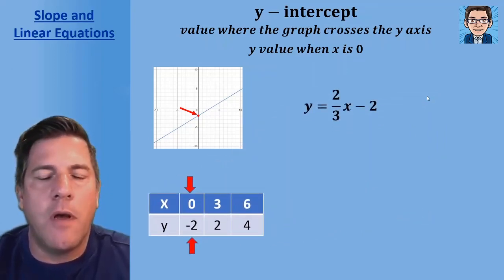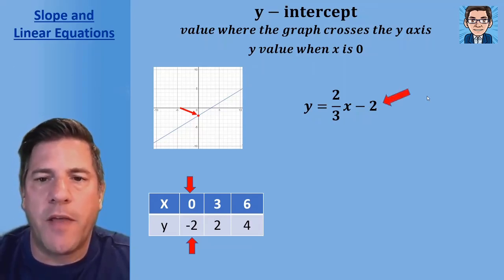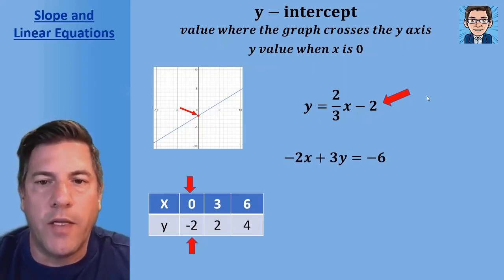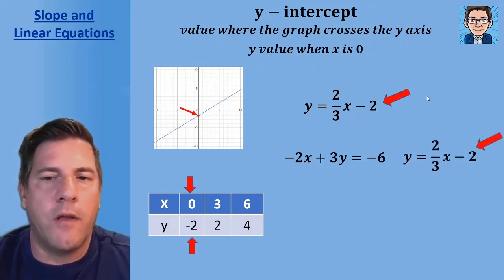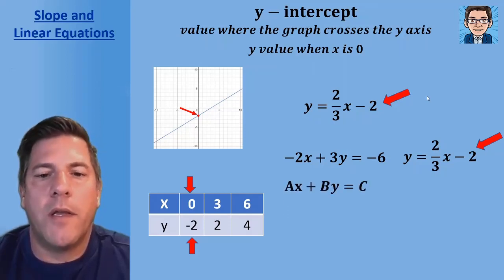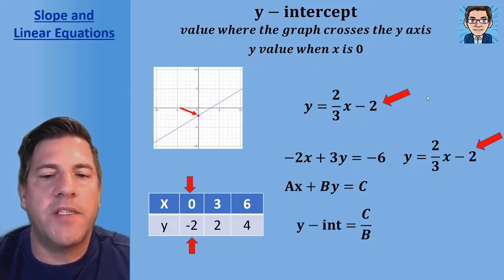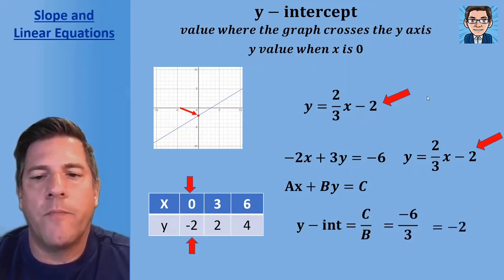For an equation in slope-intercept form solved for y, just pick the number not being multiplied by x — with its sign. Here negative two is our y-intercept. If the equation isn't solved for y, we can solve for y and pick off the y-intercept as the constant term. Or in standard form ax plus by equals c, the y-intercept is c over b. In this case, that's negative six over three, or negative two.